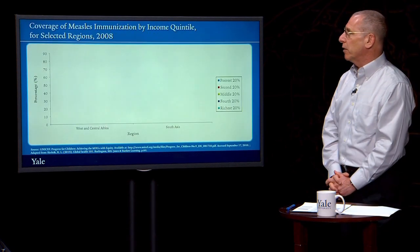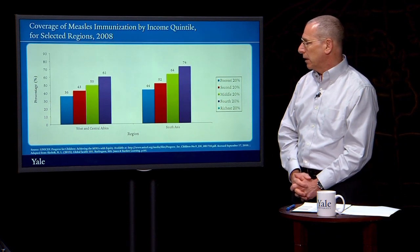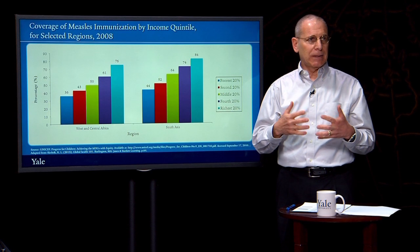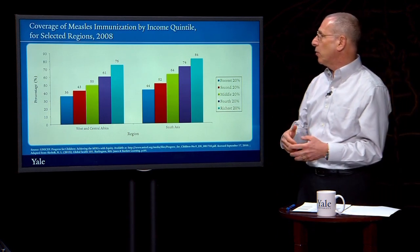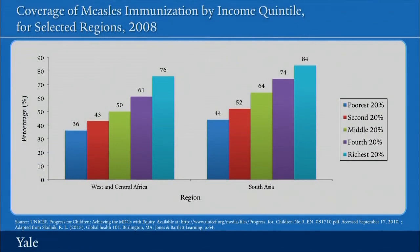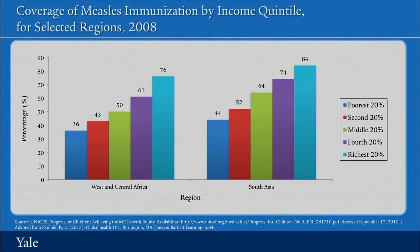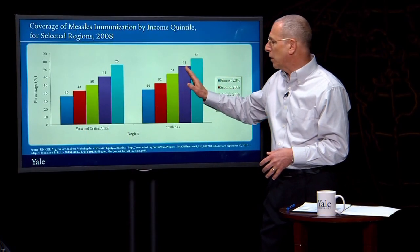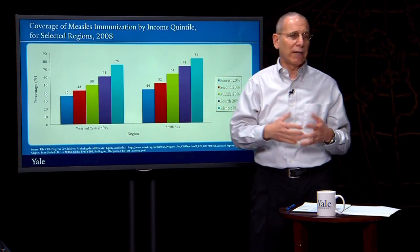Looking at measles coverage by income, we again see a very strong correlation between income and coverage. However, thanks to important efforts by a number of countries and collective efforts through the Global Alliance for Vaccines and Immunization — the Gavi Alliance — if we were to look at 2013 data superimposed on this, there would be a very good story to tell. Immunization coverage rates have gone up even among lower-income groups. There are still important gaps, but many countries have made important progress in closing them.